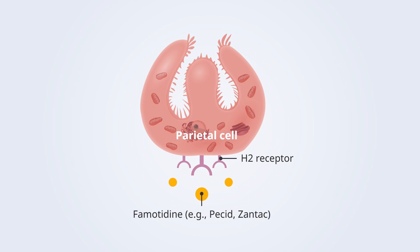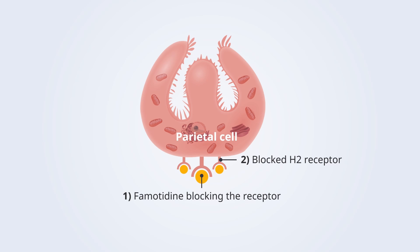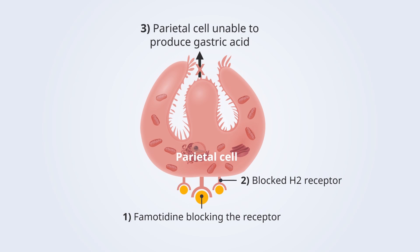Famotidine is a common example of an H2 receptor antagonist. Famotidine works by blocking the H2 receptors on gastric parietal cells, which helps to suppress the secretion of gastric acid.